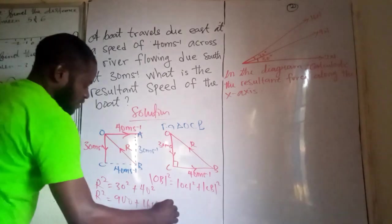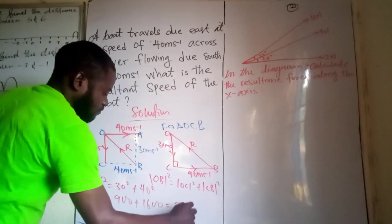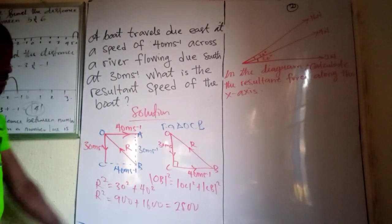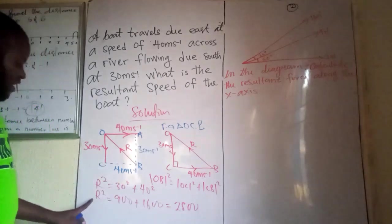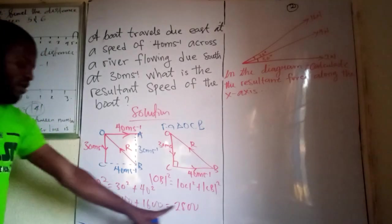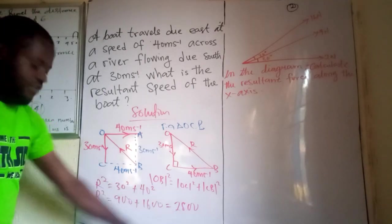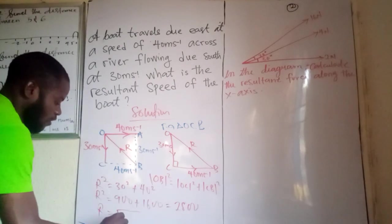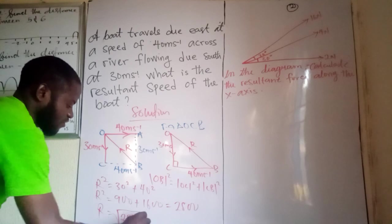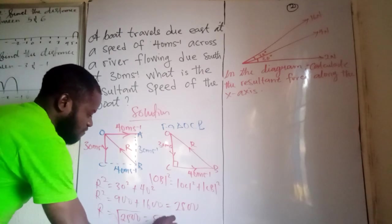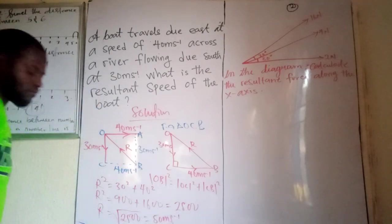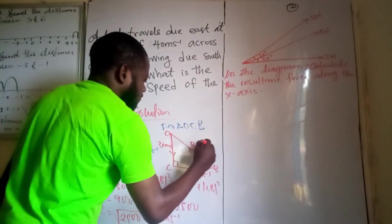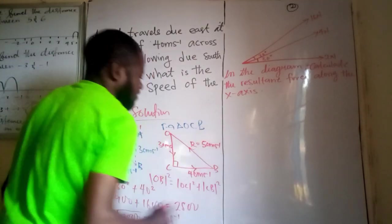So R square is going to give us 900 plus 1600. So this equivalent, so R square is equal 2500. If I have 2500 and I'm looking for resultants, R square is what's equal 2500. Hence, R is the square root of 2500. And that will give us 50 meters per second. So the resultant is 50 meters per second.